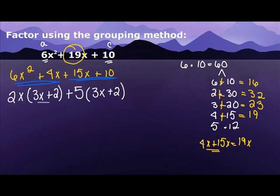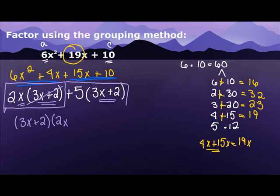Now I notice that I have a 3x plus 2 and a 3x plus 2. Once again, I'm going to factor that out. So I'm going to have 3x plus 2. Now if I look at this first part, if I take out a 3x plus 2, I'm left with a 2x. When I look at my second part, and I take out a 3x plus 2, I'm left with a 5. And now you've just factored it using the grouping method.